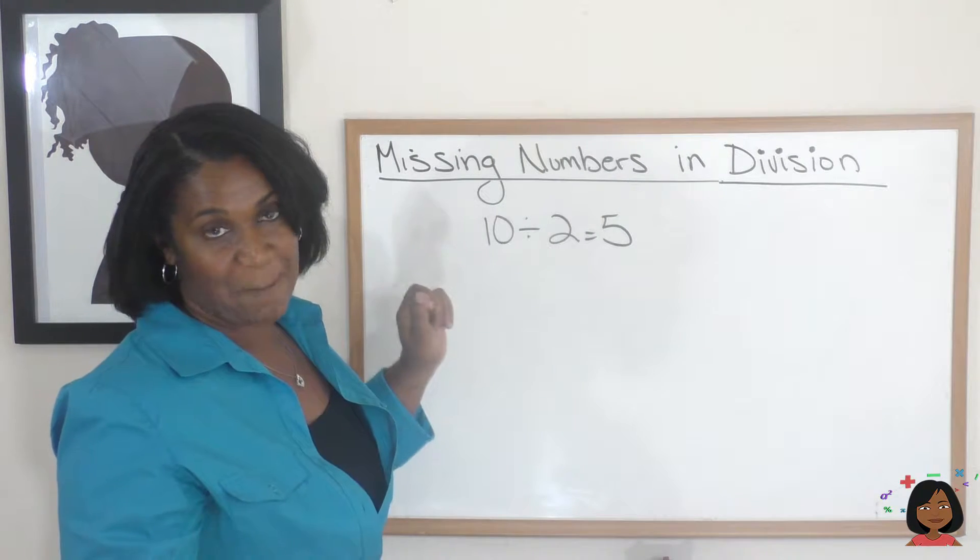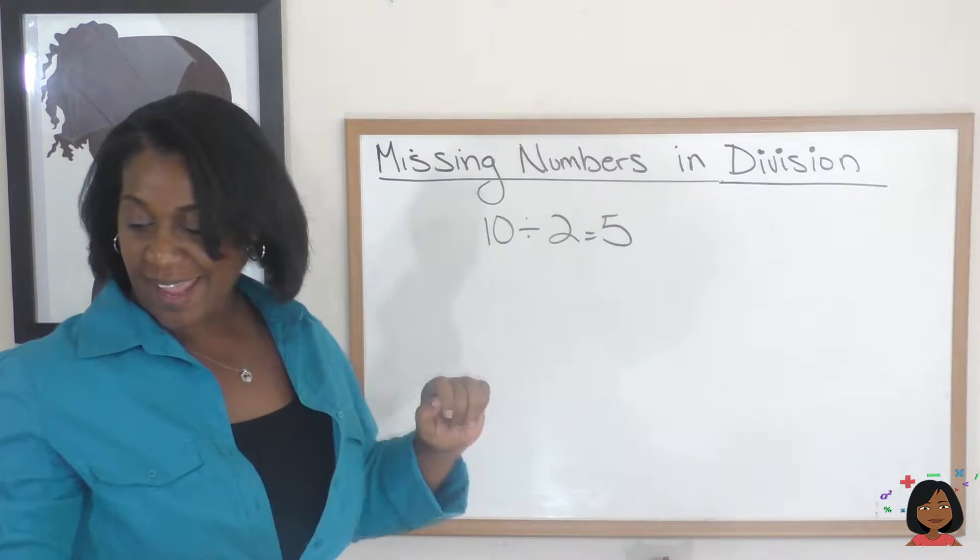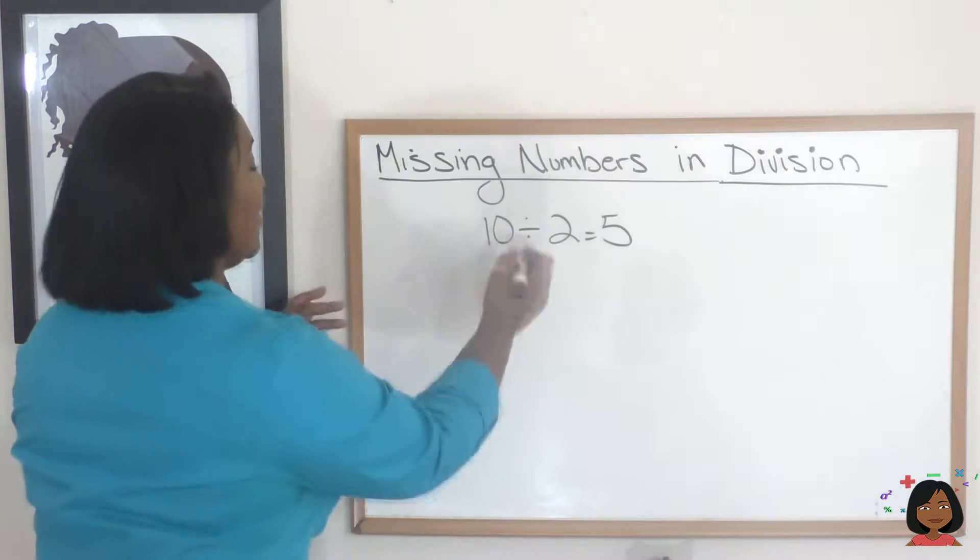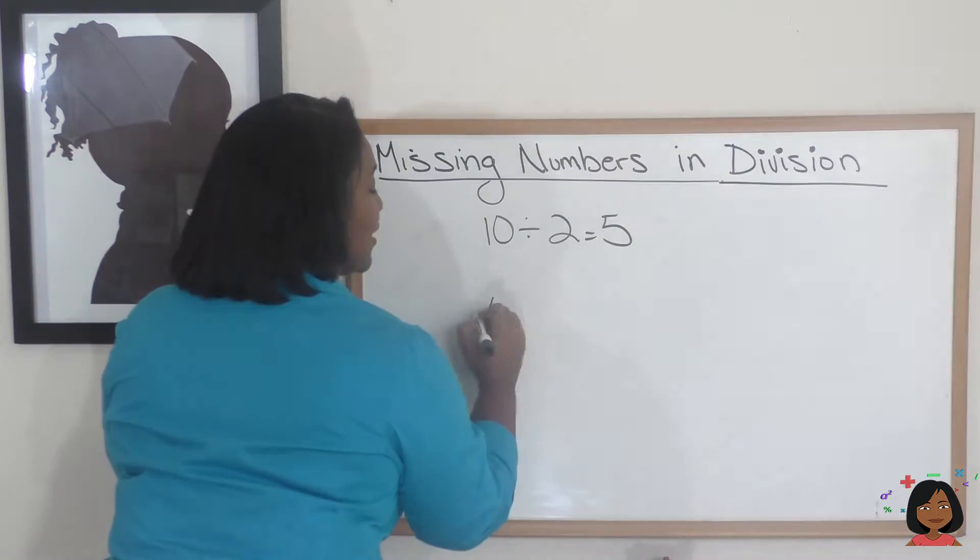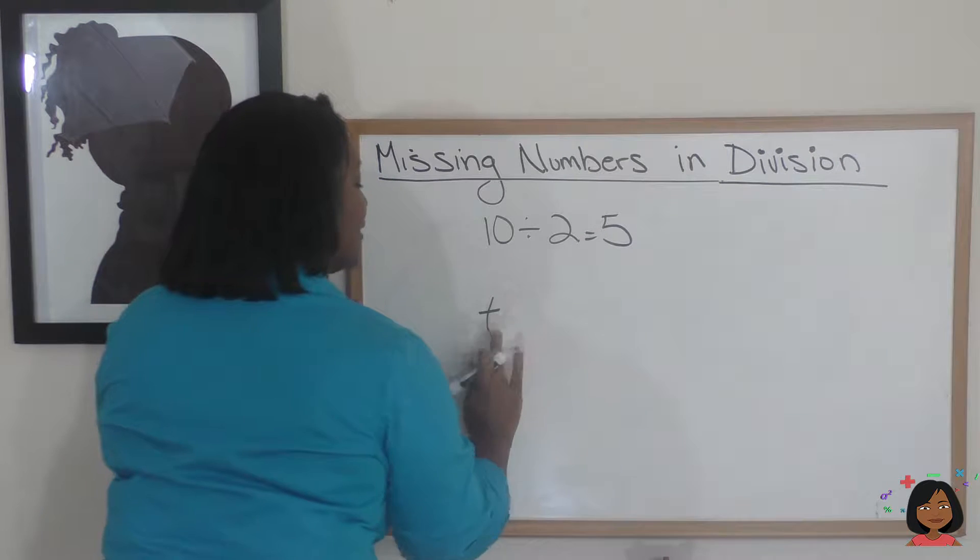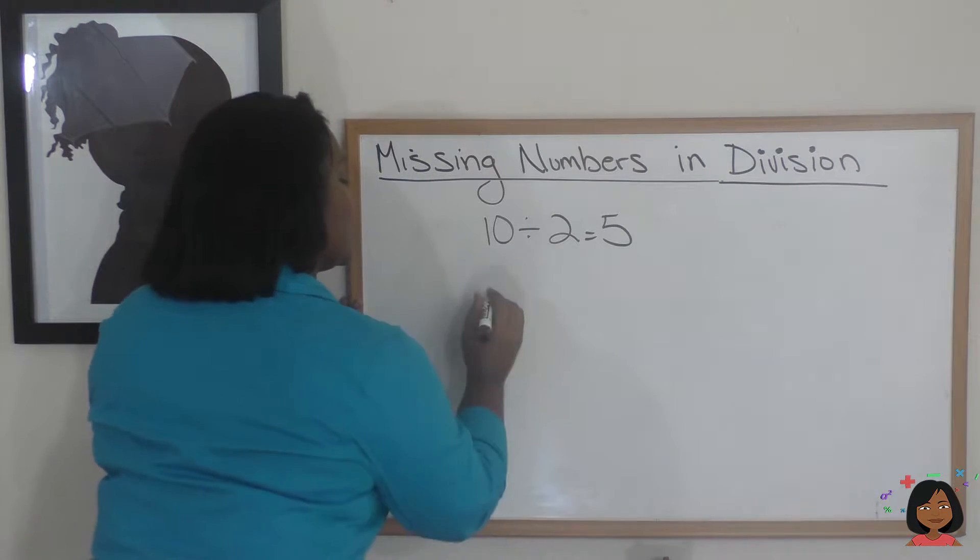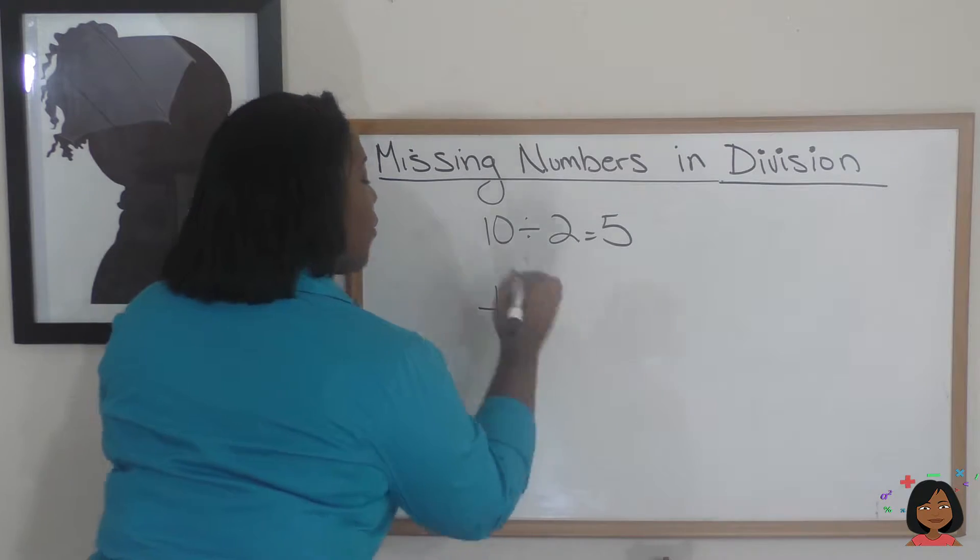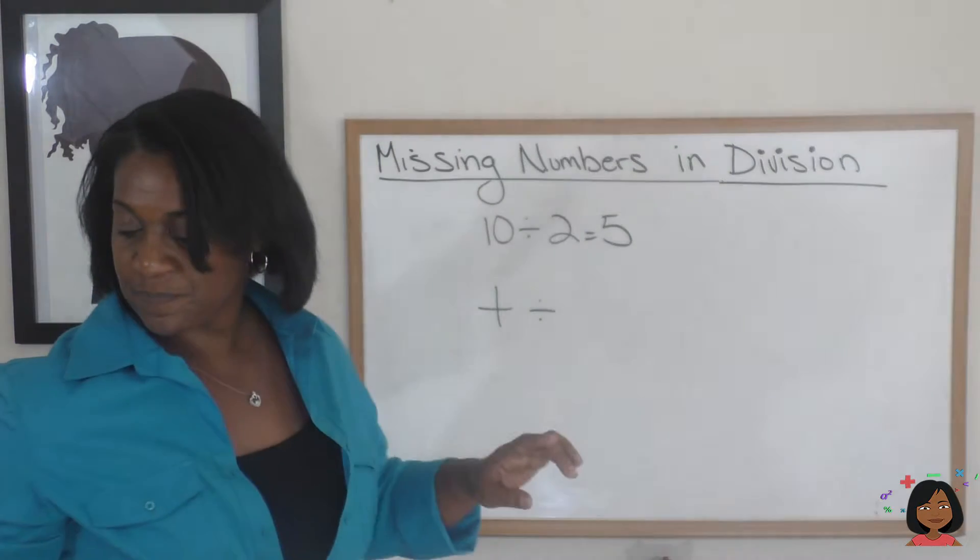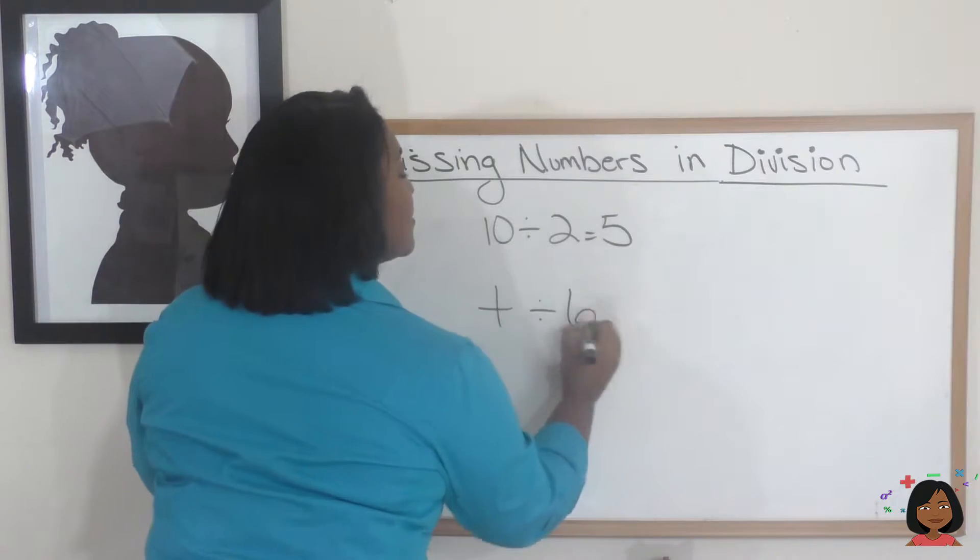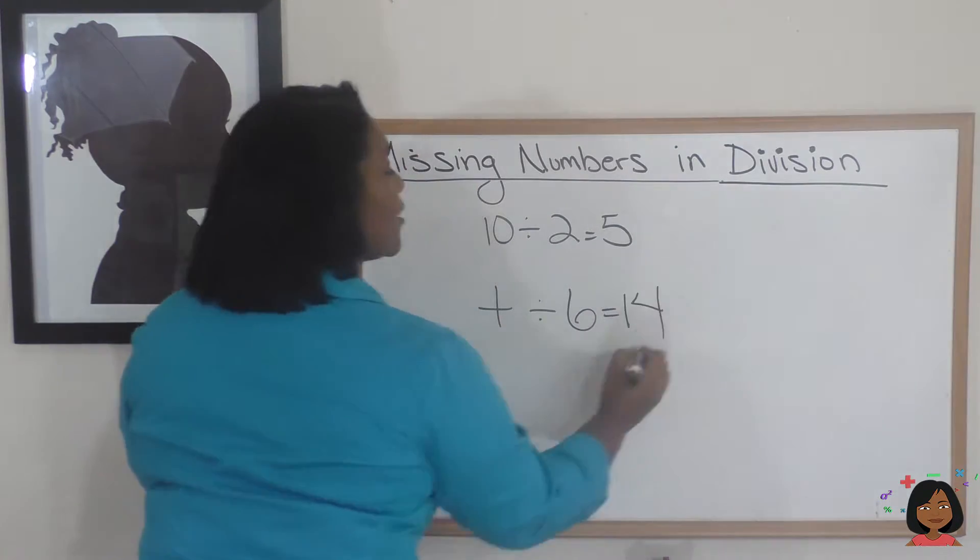So let's say we had an unknown - I'm going to use the letter T. Let me write T nice and straight. We're going to divide T by 6, and that equals 14.